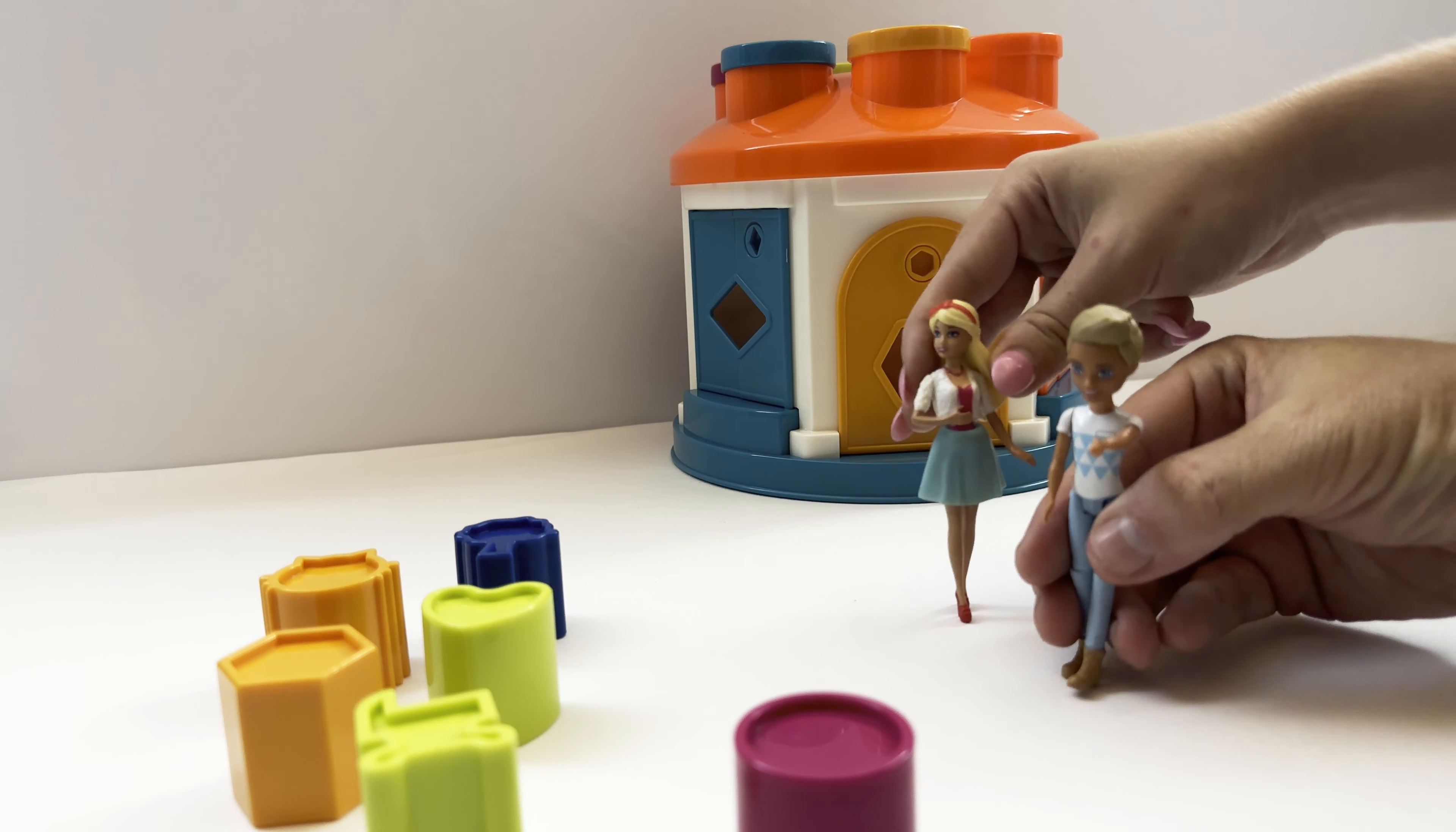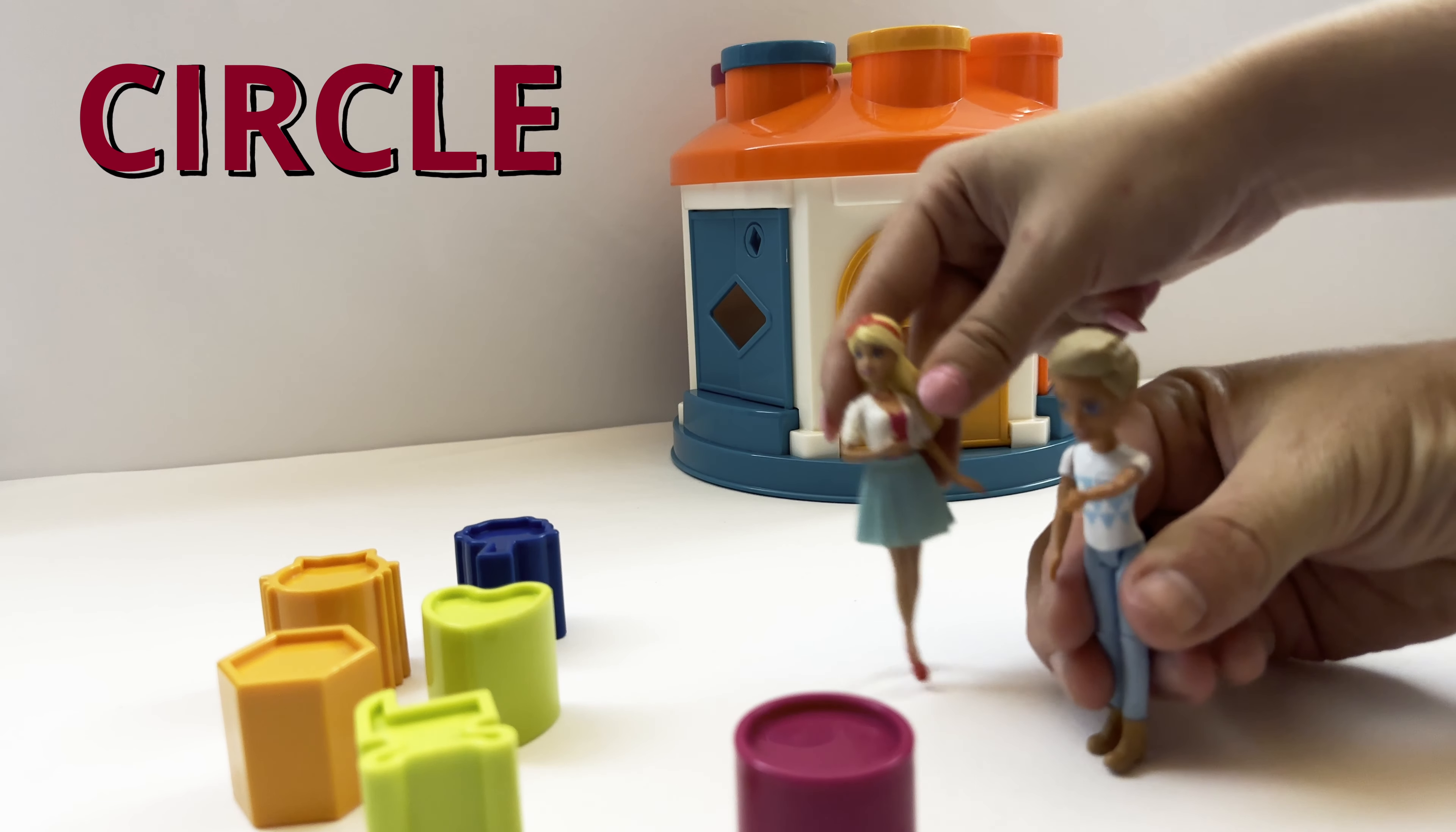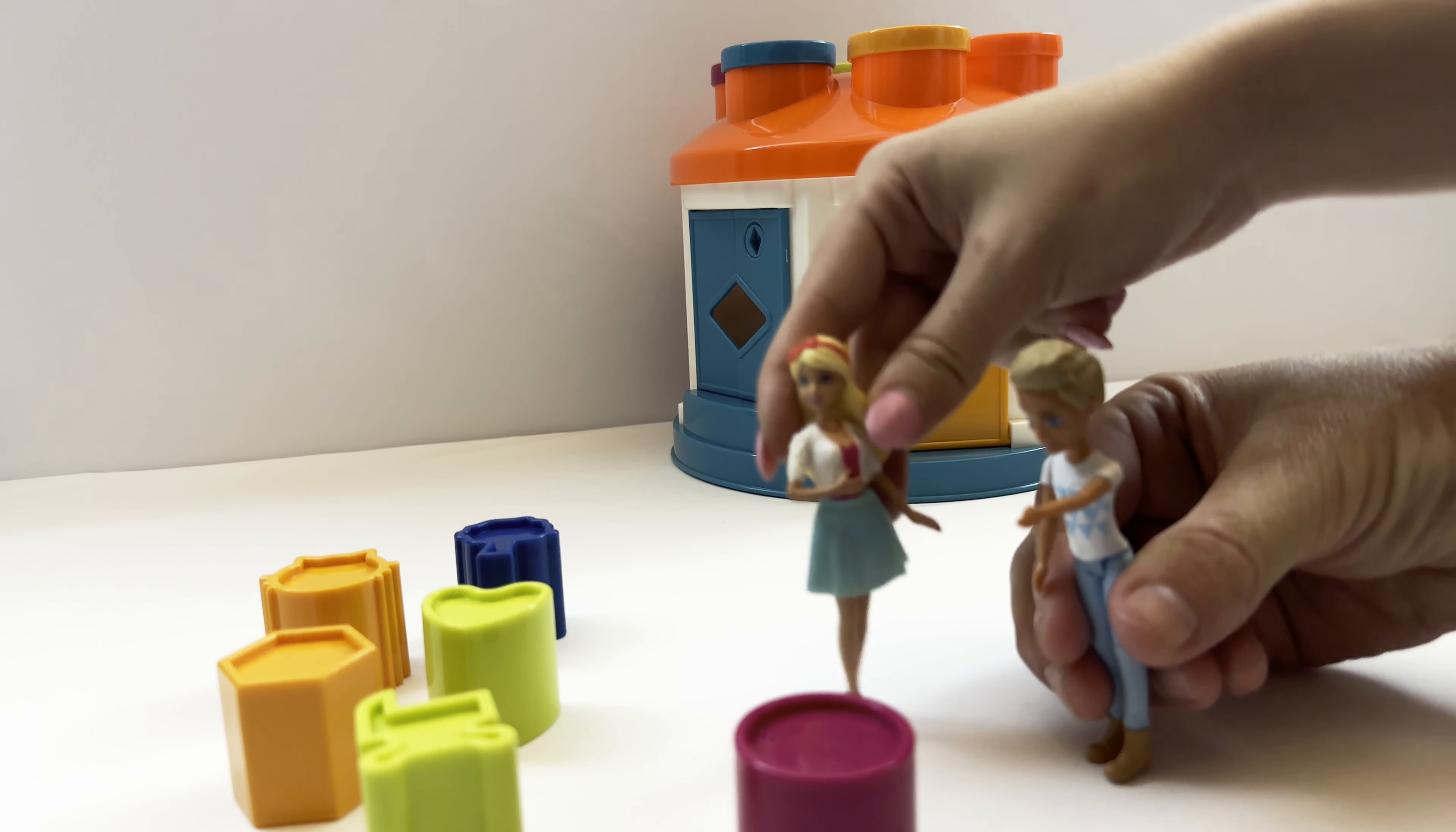Hey, Barbie, look at this circle. Yes, Ken, this is a magenta circle. I'm sure there's a place for it in the house.